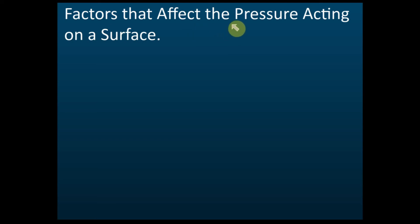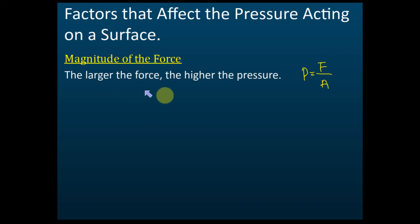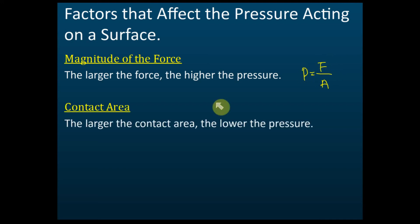What are the factors that affect the pressure acting on the surface? The first factor is the magnitude of the force. Pressure equals force per unit area, so the magnitude of the force will affect the pressure. The larger the force, the higher the pressure, because pressure is directly proportional to force.